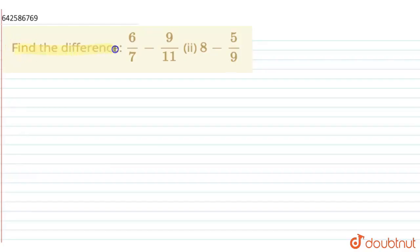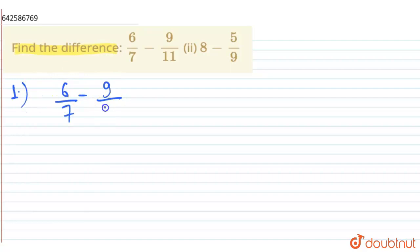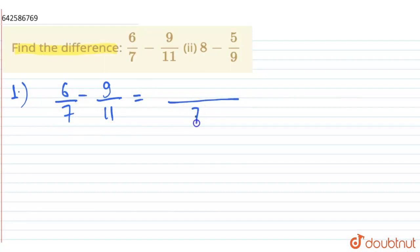The question is: find the differences. The first question is 6/7 minus 9/11. To get the difference between these fractions, we have to find the LCM of 7 and 11. The LCM comes out to be 77. We have to write these fractions in equivalent fraction form.